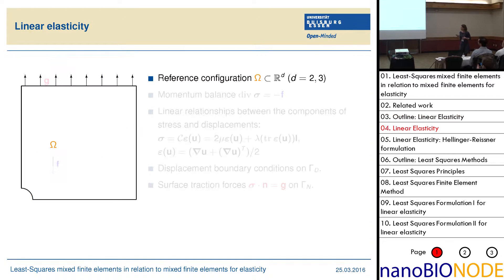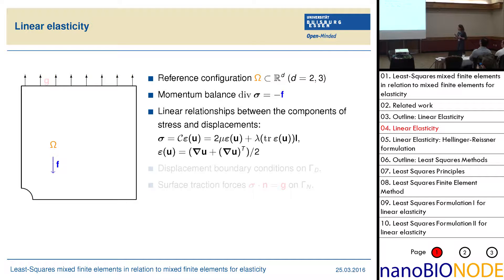So first, we recall notation on linear elasticity. You have, like in the previous talk, some plate that has a reference configuration omega that is subject to some forces F such that you get the momentum balance. Linear elasticity means linear relationships between components of stress and displacements, with the Lame parameters mu and lambda. You also have a displacement boundary condition on some part of the boundary, and on the other part you have some tractions and forces.